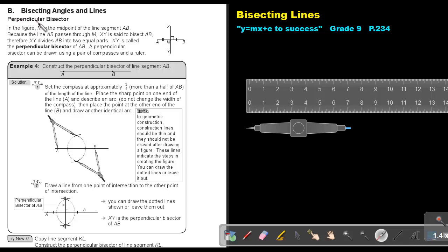The perpendicular bisector. In the figure M is the midpoint of line segment AB. Because the line XY passes through M, XY is said to bisect AB. Therefore, XY divides AB into two equal parts. XY is called the perpendicular bisector of AB.